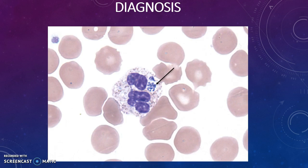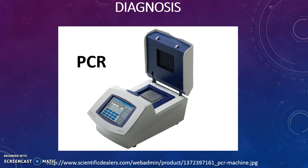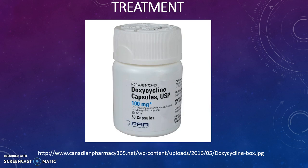The diagnosis is made by Morula on blood smear, which is rare, but again a very common exam question for anaplasmosis. With that being said, the gold standard is PCR, although you can treat based on clinical suspicion alone. Treatment is doxycycline, 100 mg PO BID for 10 days.